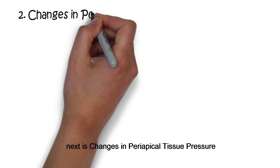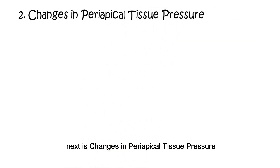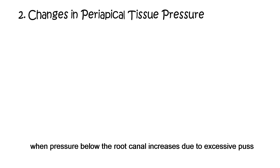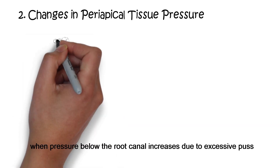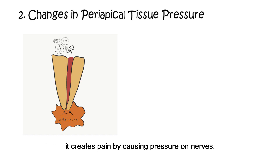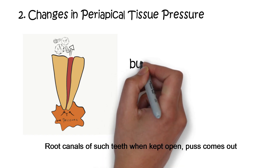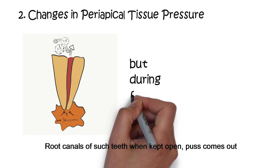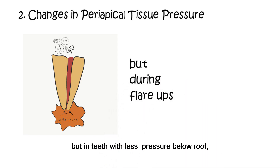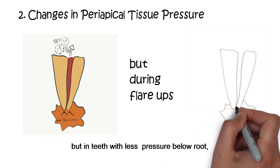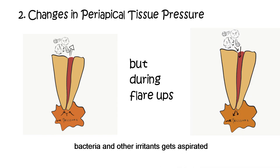Next is changes in periapical tissue pressure. When pressure below the root canal increases due to excessive pus, it creates pain by causing pressure on nerves. When the root canal of such teeth is kept open, pus comes out. But in teeth with less pressure below the root, bacteria and other irritants get aspirated into the periapical area, leading to pain.